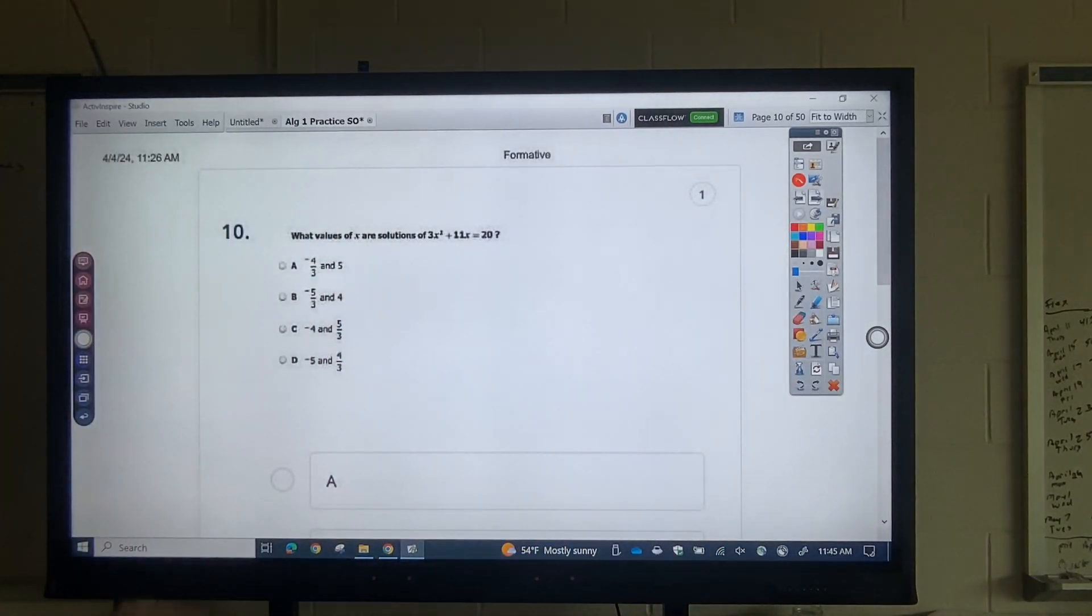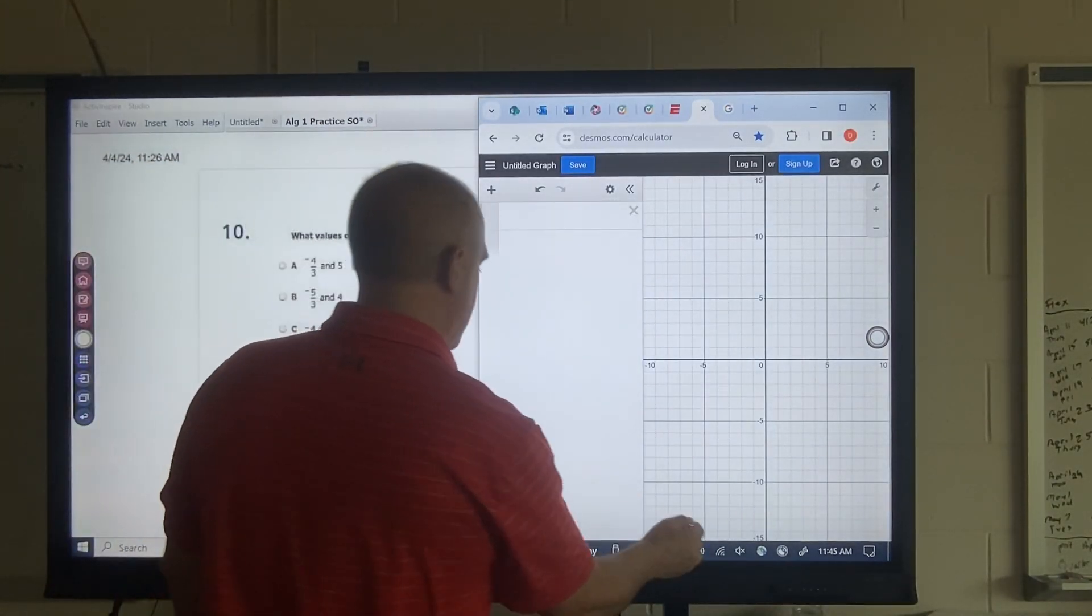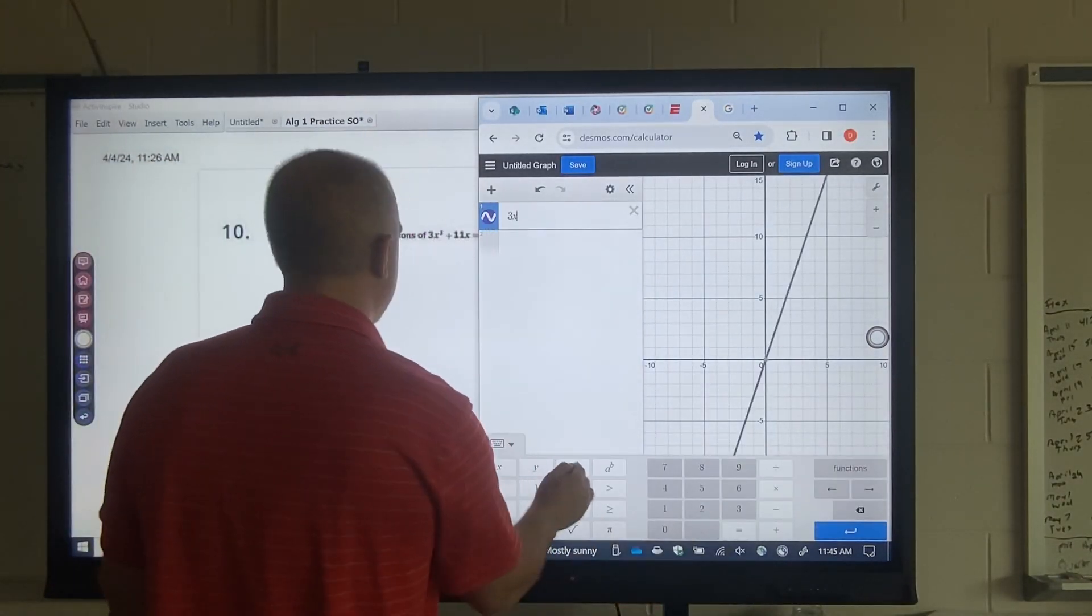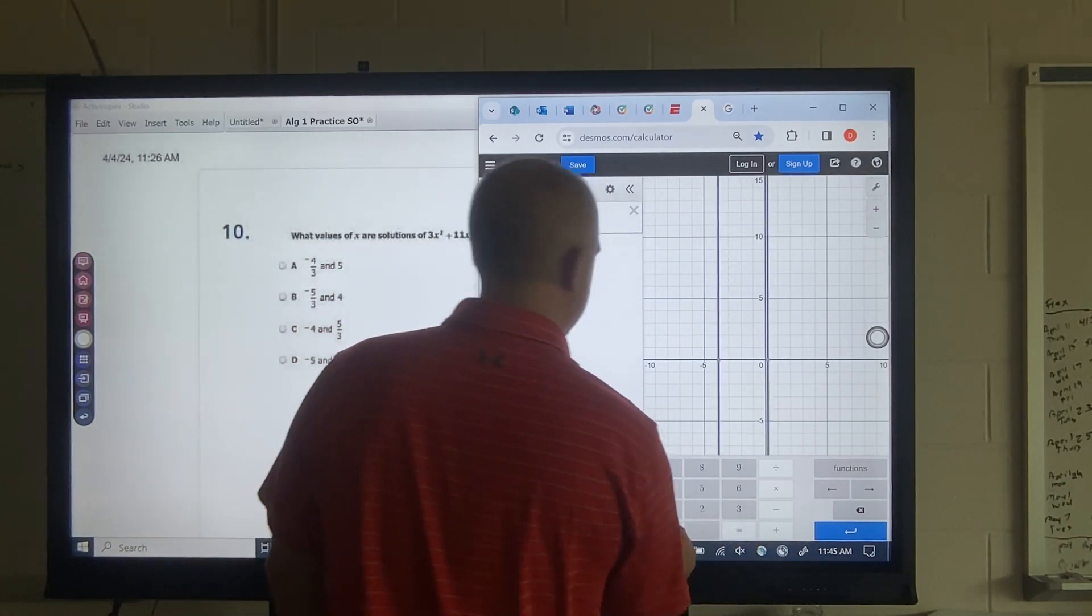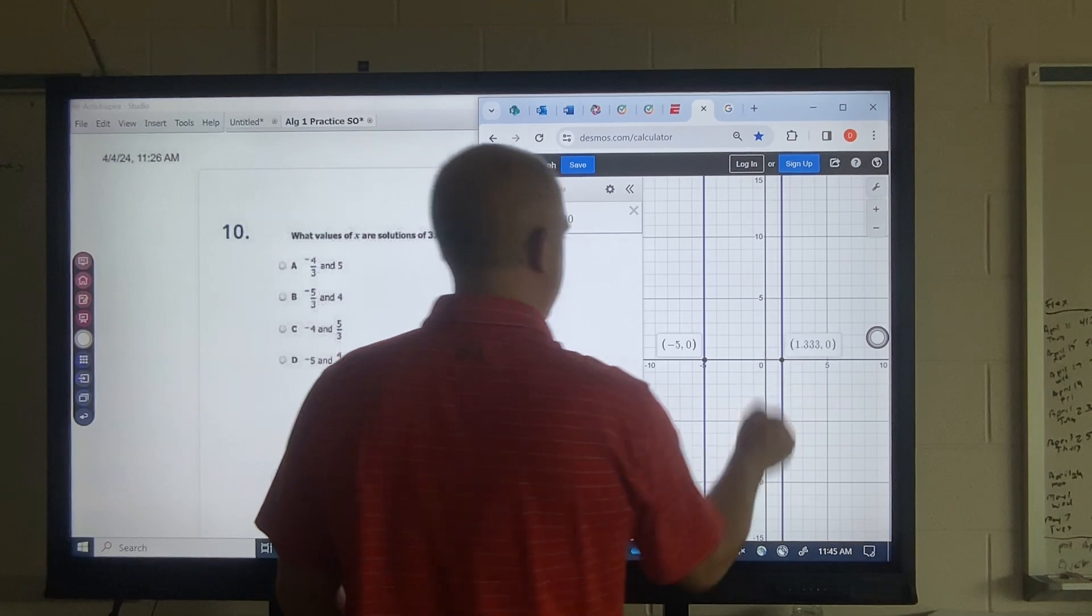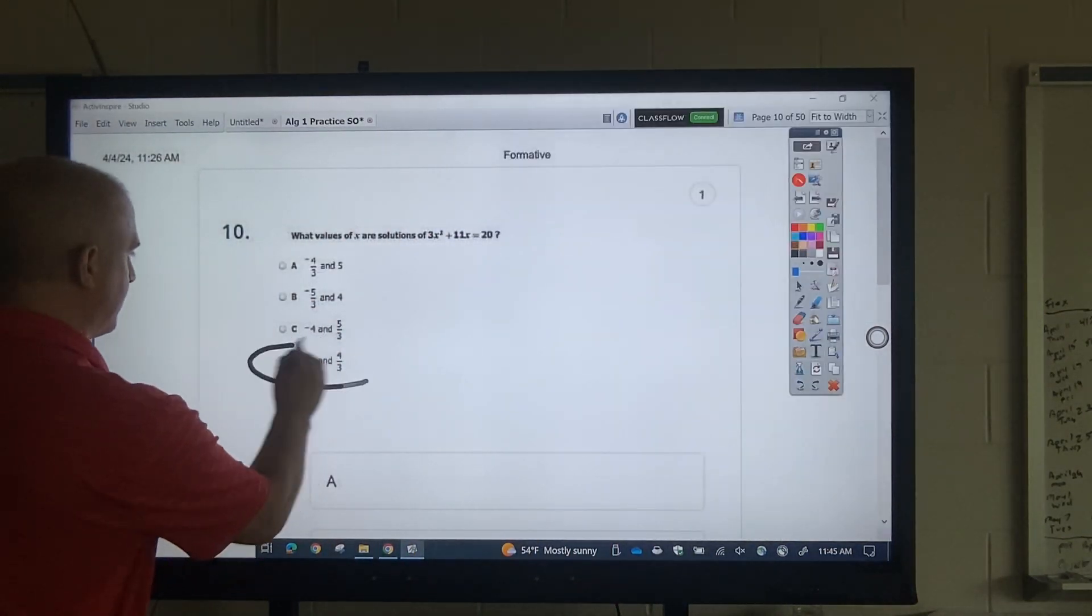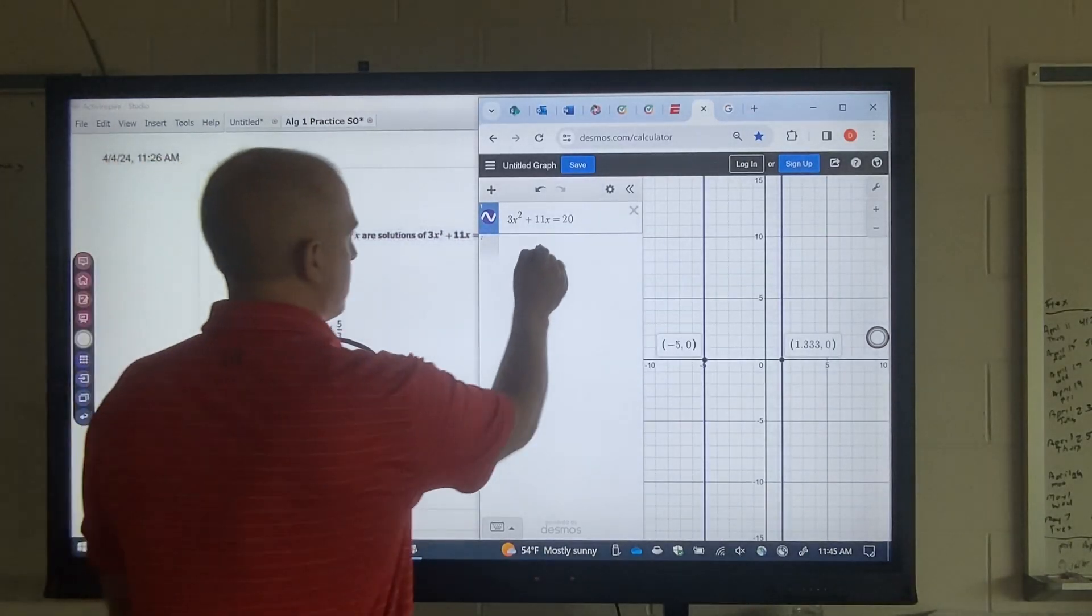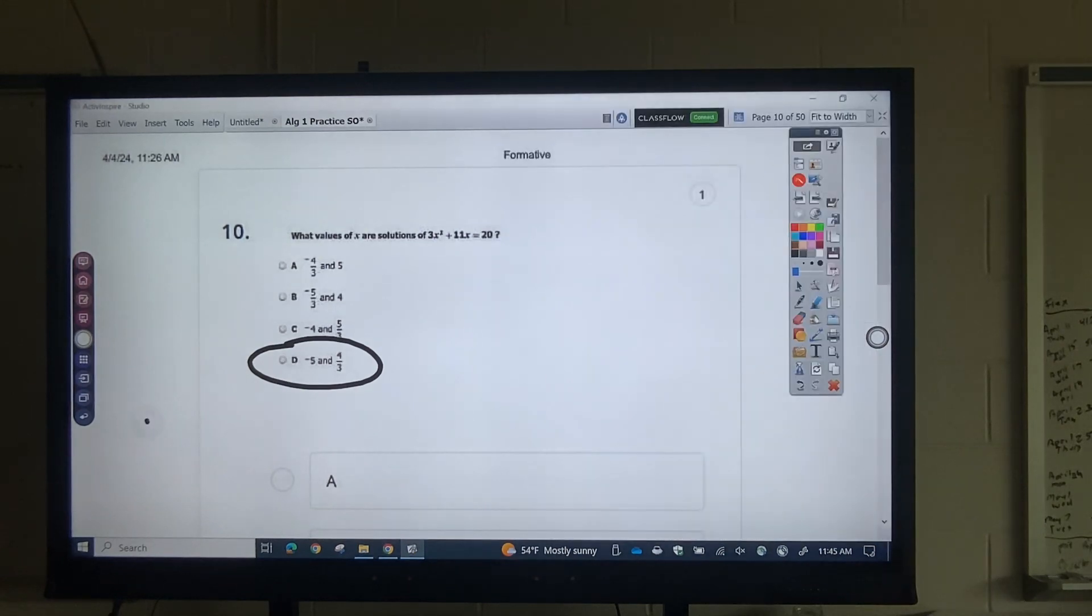Okay. What are the solutions? 3x squared plus 11x equals 20. Okay. 3x squared plus 11x equals 20. Okay. Negative 5 at 1.3. Well, negative 5 wouldn't be a good test taker. It's got to be this. Well, 4 thirds, if you ever want to check, you can always do that to see if that matches your decimal.